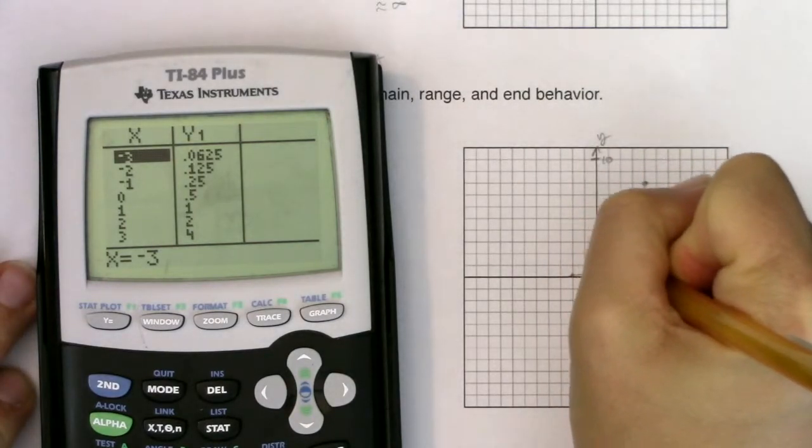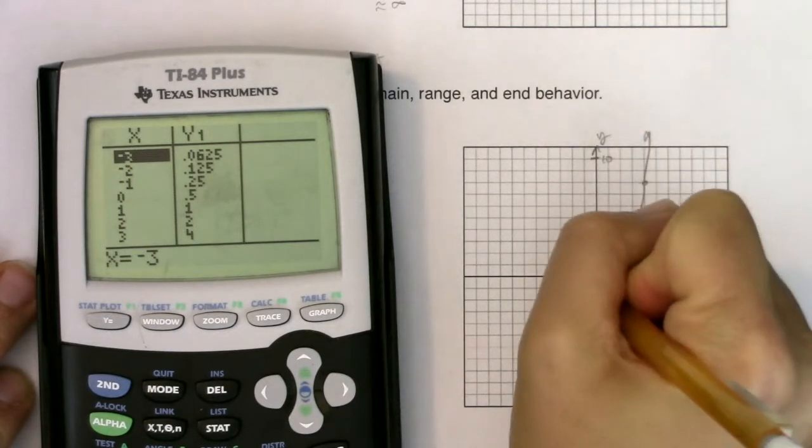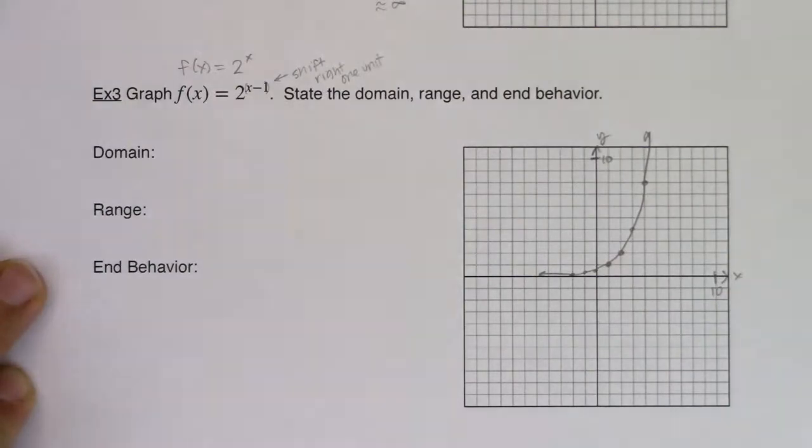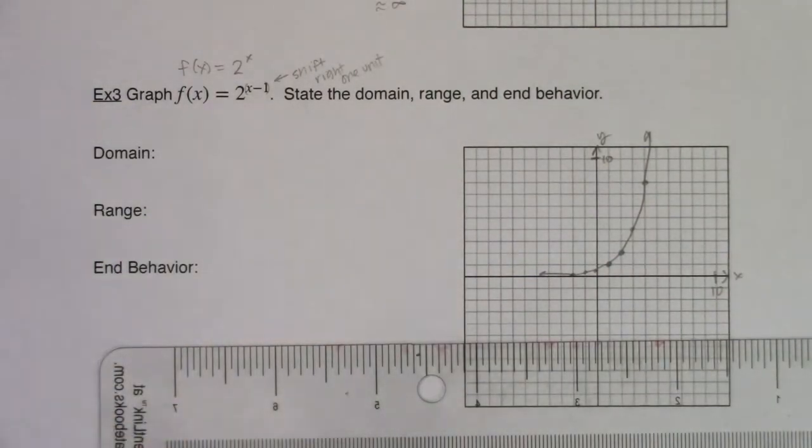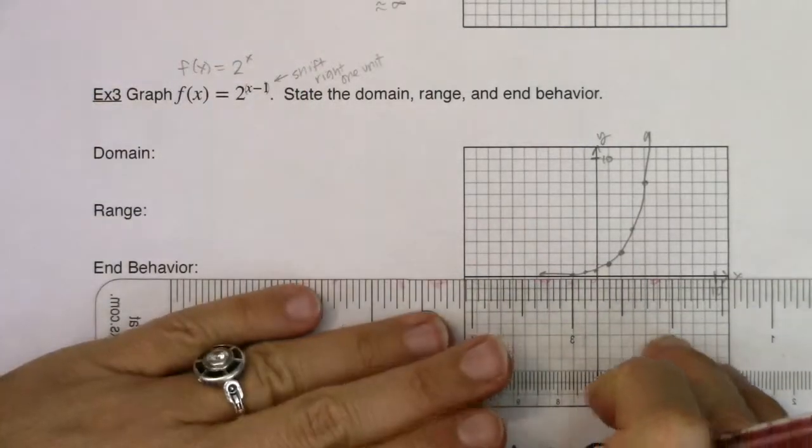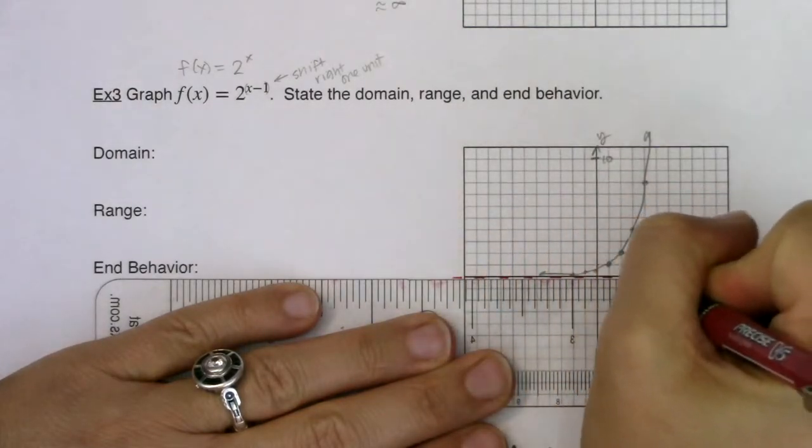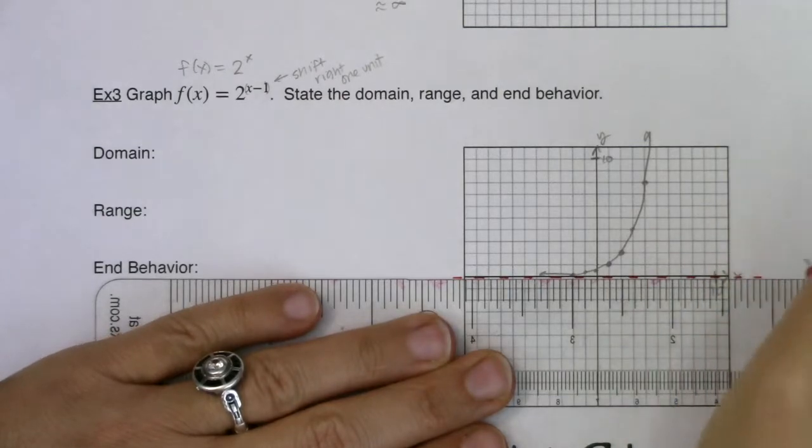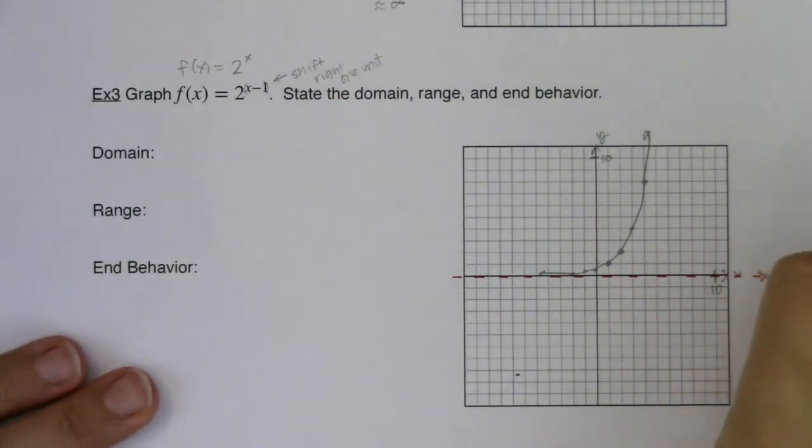Let me go ahead and graph this. I'm going to sketch the horizontal asymptote in here. A horizontal asymptote, or any asymptote, they're dotted lines because they're not technically part of the graph—they're just boundaries that we have. So we have a horizontal asymptote at y = 0.